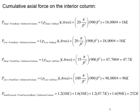We have four loads to account for. Starting with the roof dead load: 20 pounds per square foot times 900 square feet equals 18,000 pounds, or 18 kips. For the roof live load: 20 pounds per square foot times 900 square feet also equals 18,000 pounds, or 18 kips.